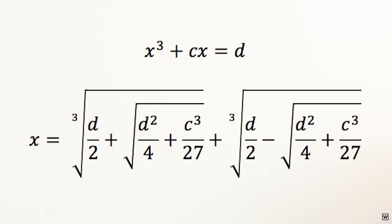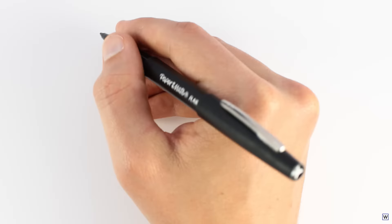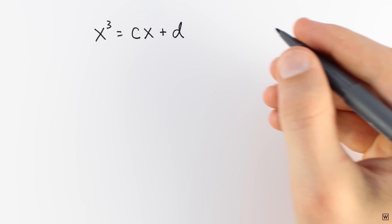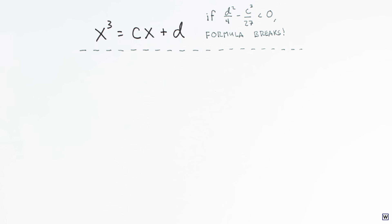Cardan went on to improve his borrowed formula, even making it work for cubics that included an x squared term. However, along the way Cardan came across a problem. In a slightly different version of the equation, written as x cubed equals cx plus d, under certain values of c and d the formula would break.